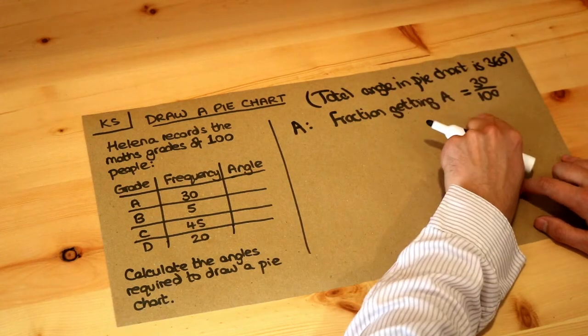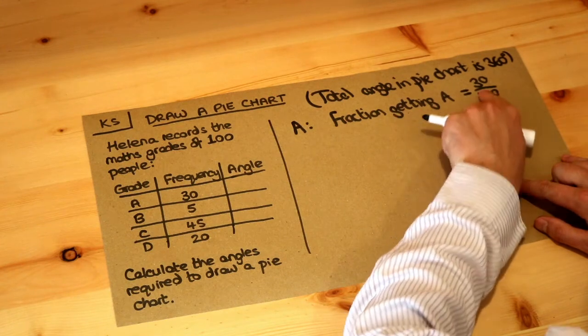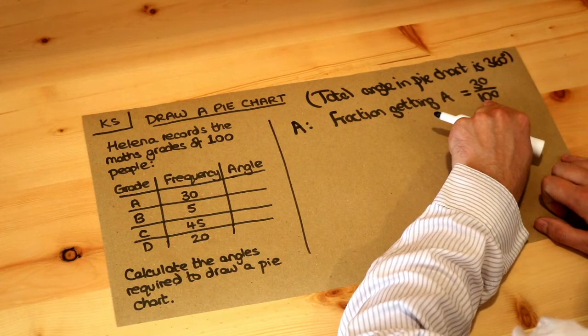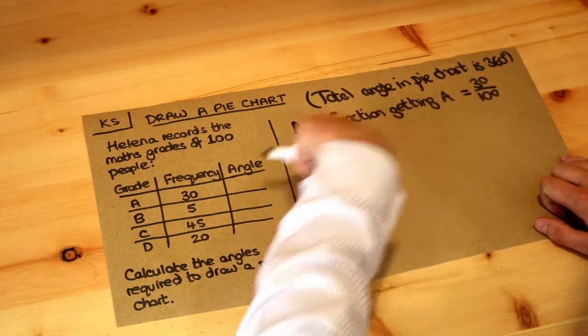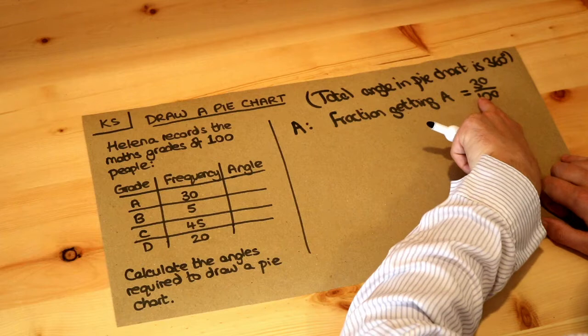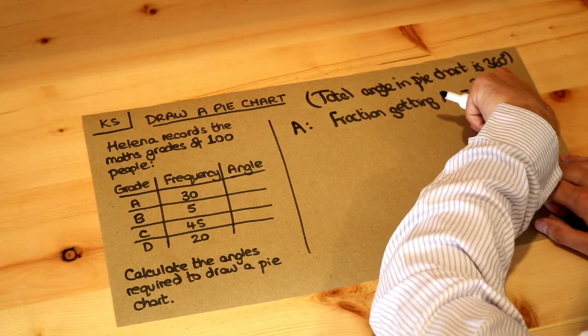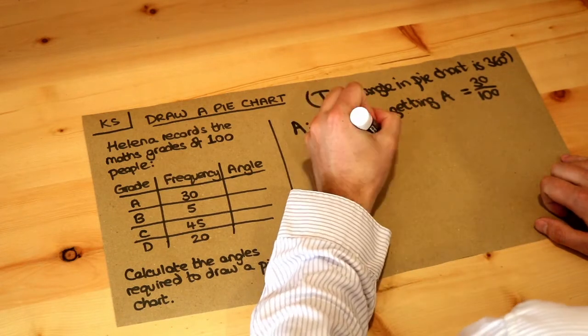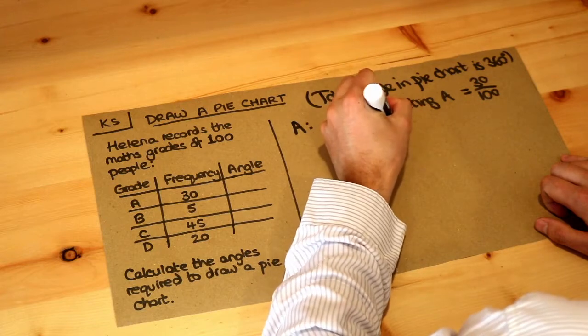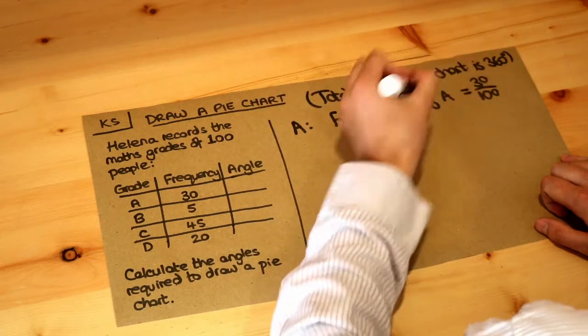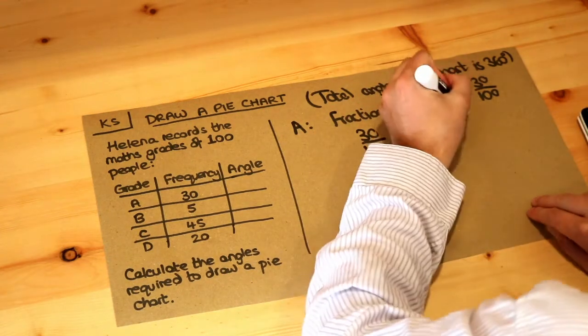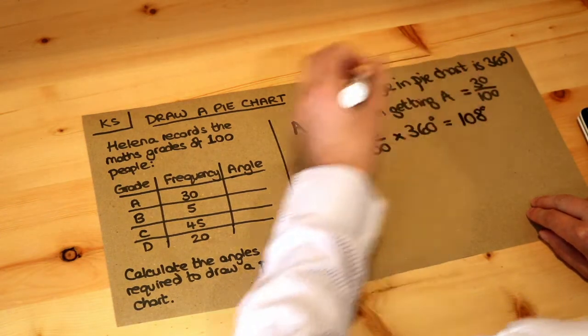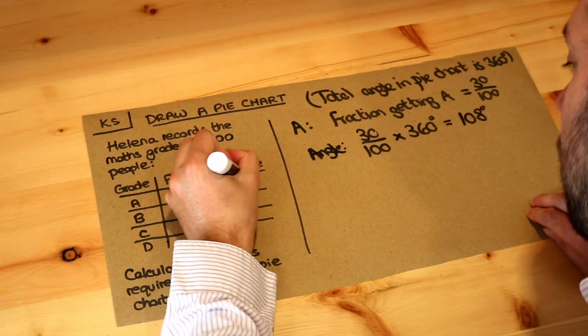So therefore if the fraction of people getting A is 30 over 100 and we know everyone in the pie chart is represented by 360 degrees, we just need to do that fraction of 360 degrees. So we do 30 over 100 multiplied by the 360 degrees and that gives you 108 degrees. So we can put the 108 degrees in here.